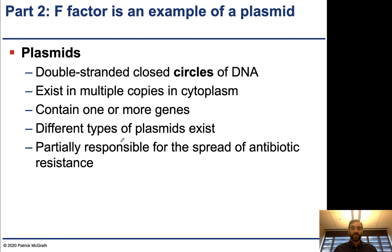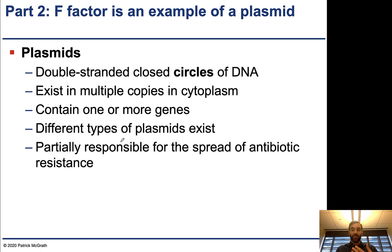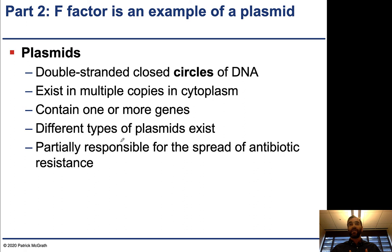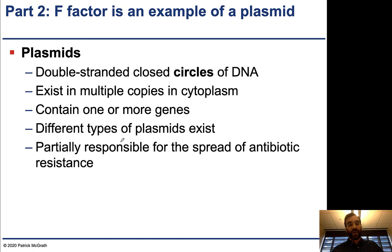The F factor is an example of a plasmid: double-stranded, closed circular DNA existing in multiple copies in the cytoplasm, encoding more than one gene. Different types of plasmid exist. Almost always, plasmids encode whatever is necessary to replicate and divide the plasmid and often allow it to transfer. These are all very important parts of the spread of antibiotic resistance.